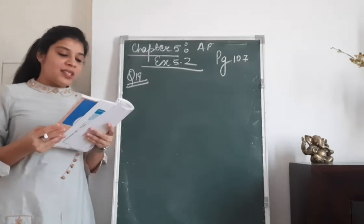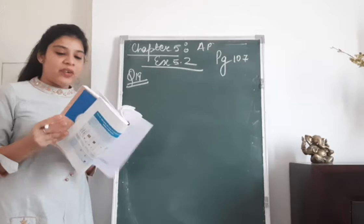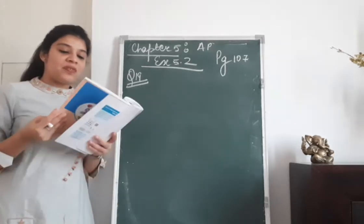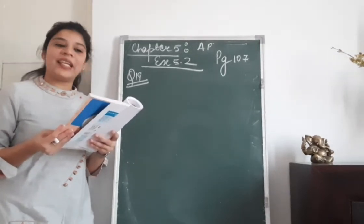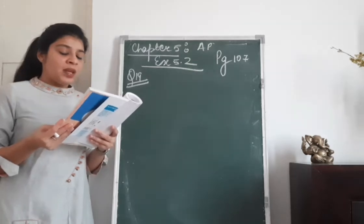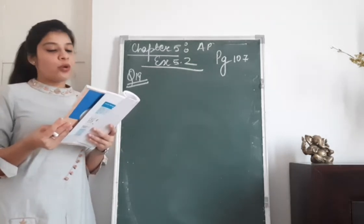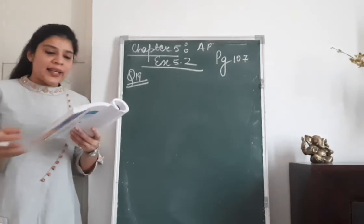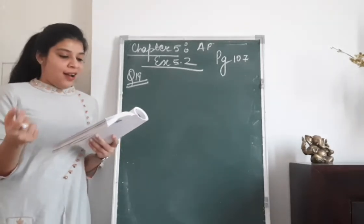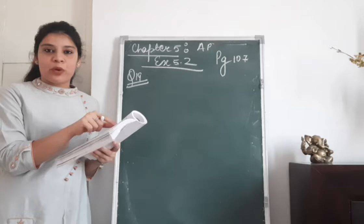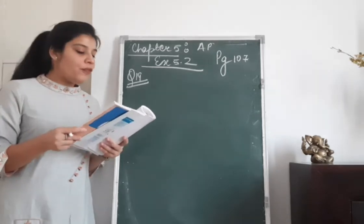Question number 19: Suga Rao started work in 1995 at an annual salary of rupees 5,000 and received an increment of rupees 200 each year. In which year did his income reach rupees 7,000? This is the first word problem we are facing in Arithmetic Progression.